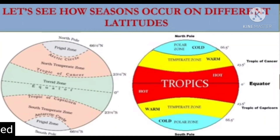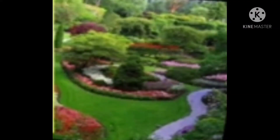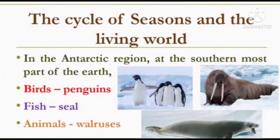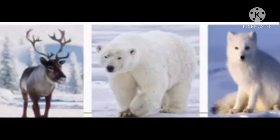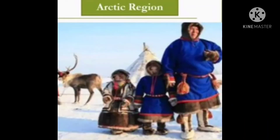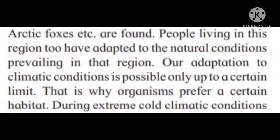The living world on the earth is affected by the cycle of seasons. In the regions between 66 degrees 30 minutes and 90 degrees in both hemispheres, even the mild sunlight available for part of the year gives rise to certain flora and fauna. In the Antarctica region, birds like penguins, fish like seals, and animals like walrus are found. In the polar regions of the northern hemisphere, animals like reindeer, polar bears, and arctic foxes are found. People living in these regions have adapted to the natural conditions prevailing there.